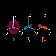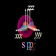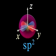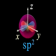Mixing of an s with the px and py orbitals produces three equivalent hybrid orbitals in the xy-plane. We call these sp2 hybrid orbitals.